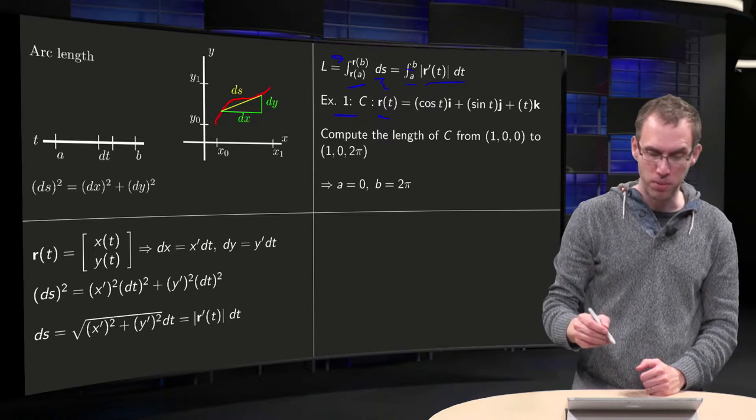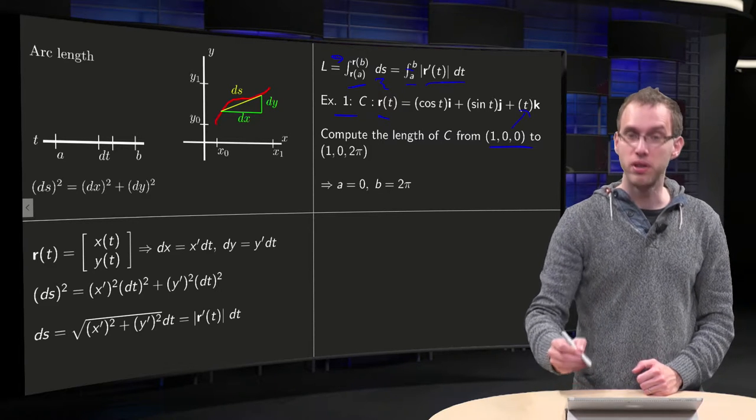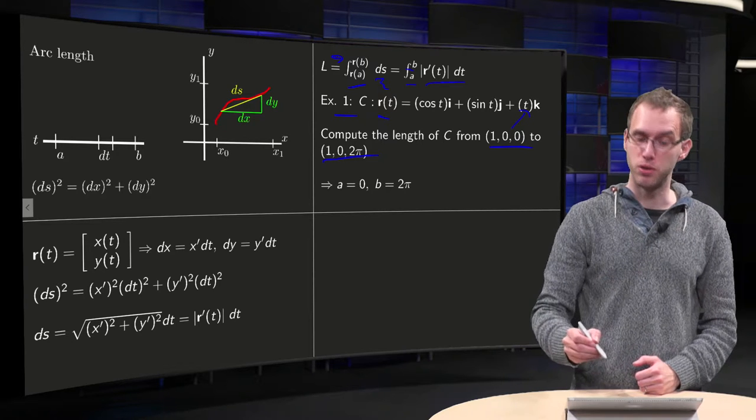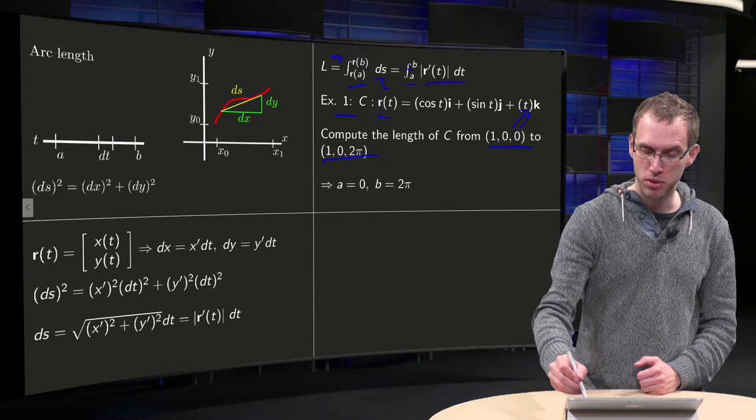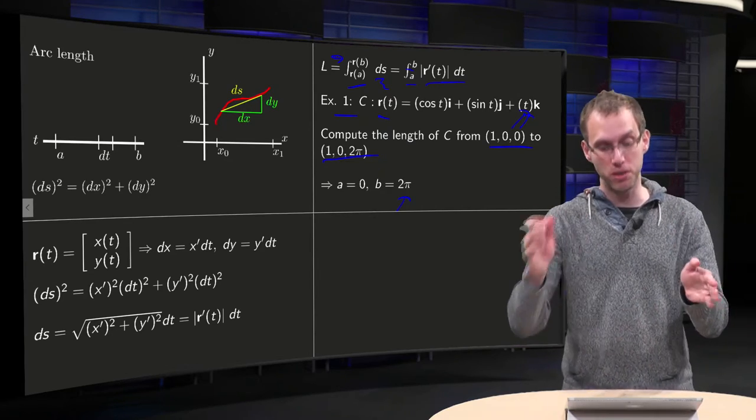At the starting point, we are at (1,0,0). And we see already from the last component that it corresponds to t equals 0. At the end point, we are at (1,0,2π). And we see again from the last component that this corresponds to t equals 2π. So we have to integrate from 0 to 2π.